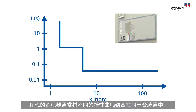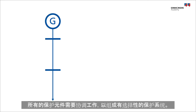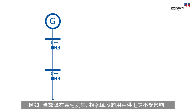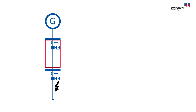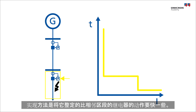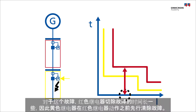Modern relays usually combine different curves within one housing. The complete protection system also includes elements residing in a number of other relays. All protective elements need to work together in order to form a selective system. For instance, when a fault occurs here, it should not affect the electrical supply of customers in the neighboring segment — only the affected segment should be switched off. Thus, only this relay should trip. This is achieved by setting it to work faster than the relay in the neighboring segment. For a specific fault current, the red relay would have a longer time to clear a fault, so the yellow relay clears it first before the red relay would react.